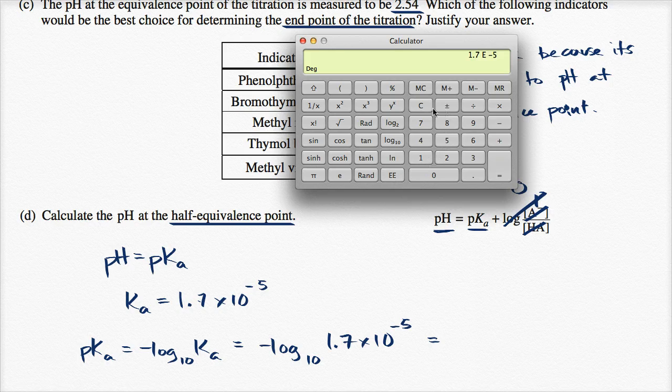Now I want to take log base 10, that's this button here. If your calculator just has a log button, that defaults to base 10. So I'll take log base 10 of that. And then I want to take the negative of that.